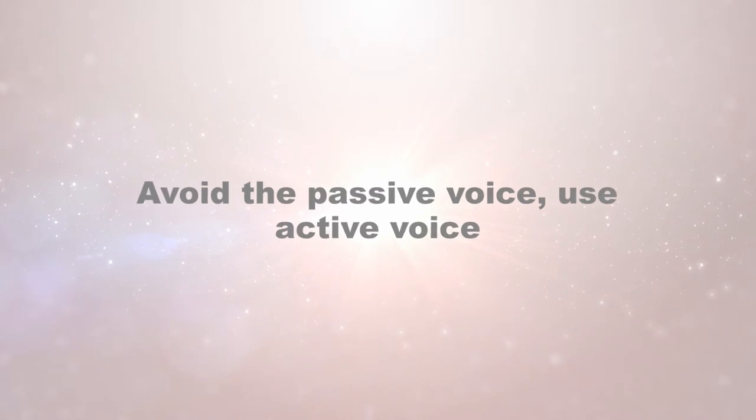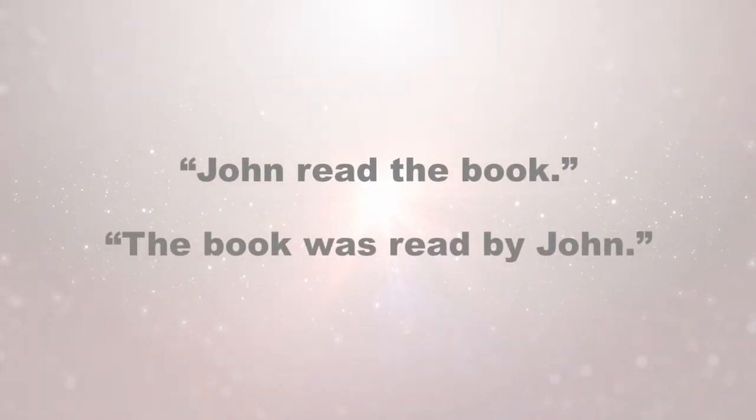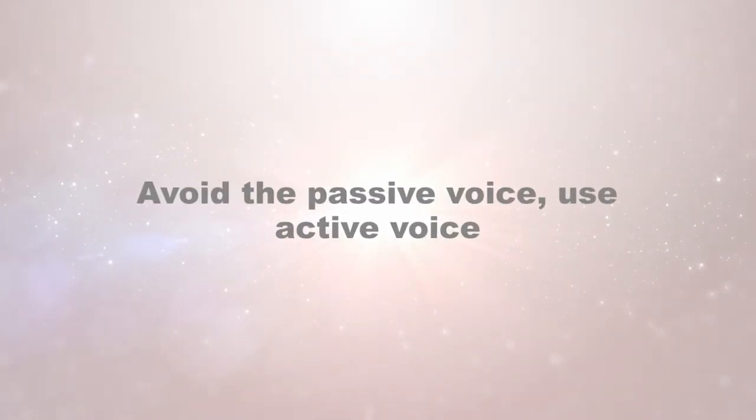Another writing tip is to avoid the passive voice and instead write in the active voice. Active voice would be 'John read the book.' Passive voice is 'the book was read by John.' We encourage you to always use the active voice. In Microsoft Word, sentences are sometimes underlined giving you the option to change to active voice. Active voice means the doer of the action is the subject of the sentence. Please turn your paper into active voice and avoid the use of passive voice.